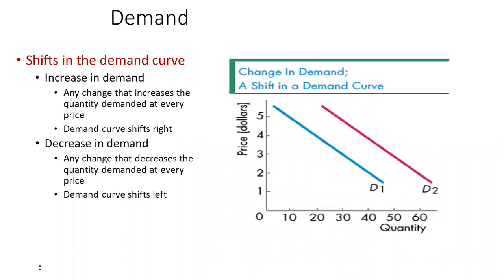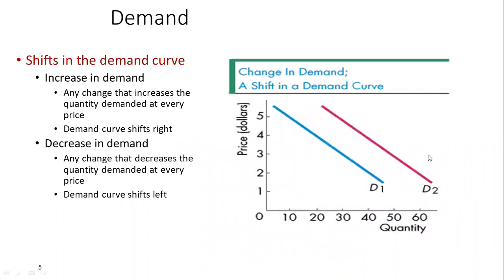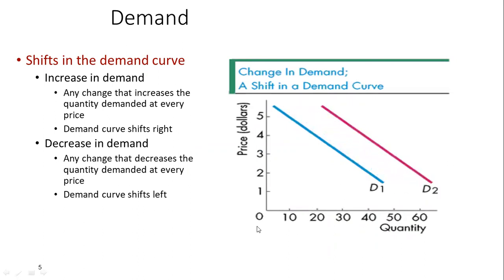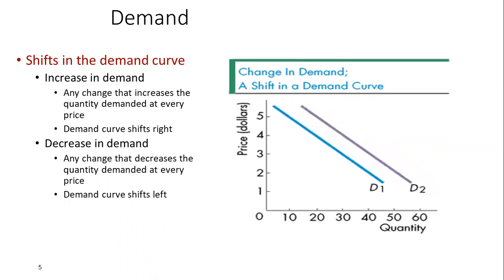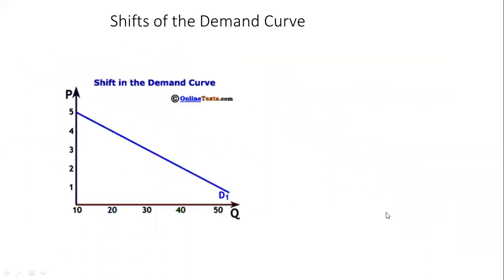If my income increases, my demand will increase — the demand curve shifts to the right. If my income decreases, the demand shifts to the left. A positive effect shifts demand right; a negative effect shifts it left. The factors behind this include income, preferences, taste, mood, and fashion — these all affect the increase or decrease of demand.